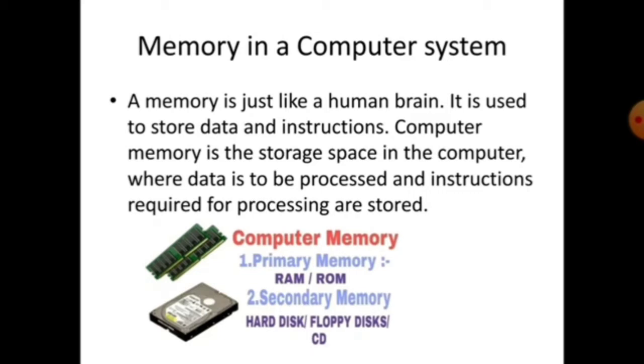Computer memory is basically of two types. First is primary memory. It includes examples RAM and ROM. Second is secondary memory. It includes examples like hard disk, floppy disk, and CD.